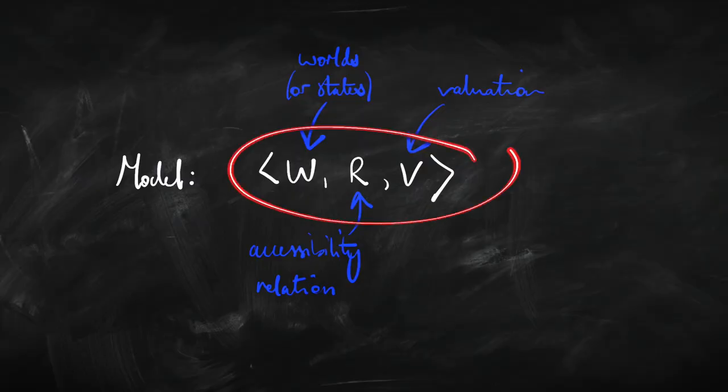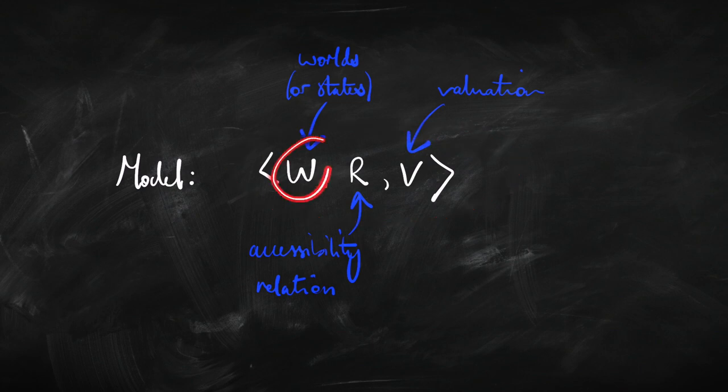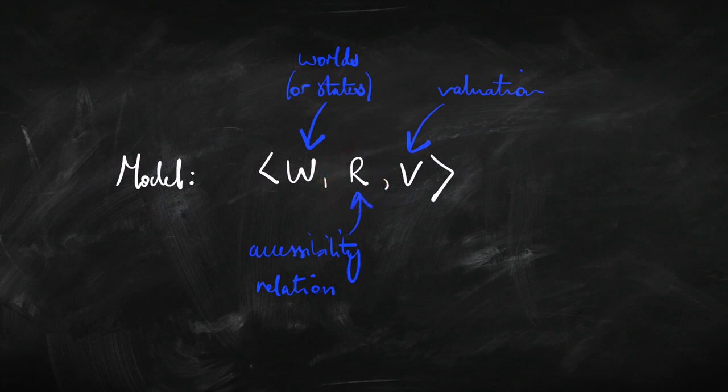Let's look at exactly what we mean by a model. It's a triple — three things make up a model. There is W, a set of points, which we think of as the possible worlds. There's the accessibility relation — the arrows between those points. And there's a valuation function dishing out truth values, true or false, to the primitive sentences. Unlike the valuation in propositional logic, we don't just say this sentence is true or false — we have to say where it's true and where it's false. So we might say that sentence P is true at world one but false at world two.